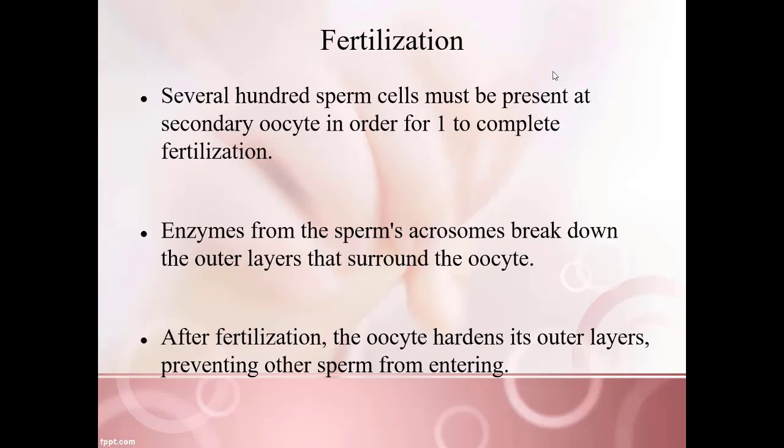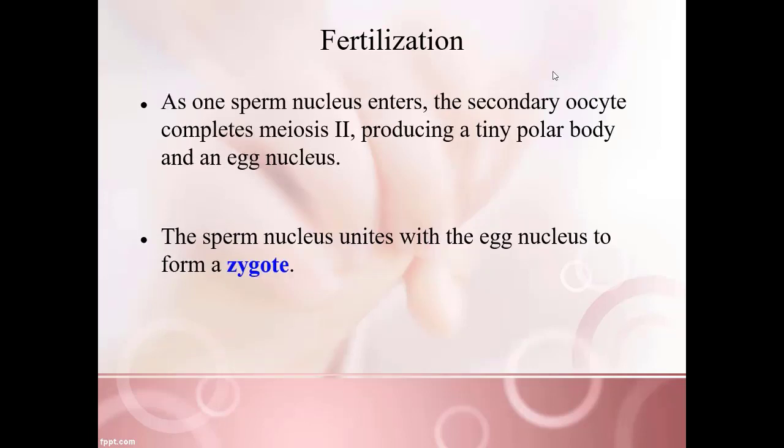Several hundred sperm cells must be present for one to penetrate the secondary oocyte, because it is protected by surrounding tissue. The acrosomes on sperm cells contain digestive enzymes, so you need several hundred to wear through that protective layer. After fertilization occurs, the oocyte hardens its outermost layers to prevent other sperm from entering. The secondary oocyte then completes meiosis 2, producing a small polar body and an egg nucleus. The union of sperm cell and egg cell forms the zygote.